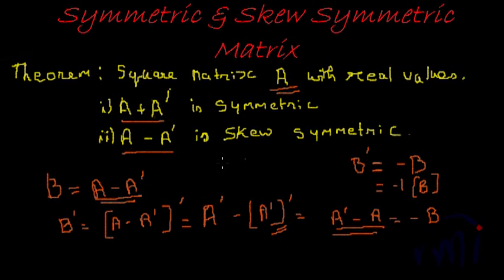A skew symmetric matrix means the diagonal elements will be 0, because for A and A transpose the diagonal elements are the same — when you subtract them, they become 0. And the elements across the diagonal will be symmetric, but one side will be the negative of the other side. That is the proof of the theorem. Thanks for watching MathSmart. Subscribe to MathSmart to know when we post a new video.